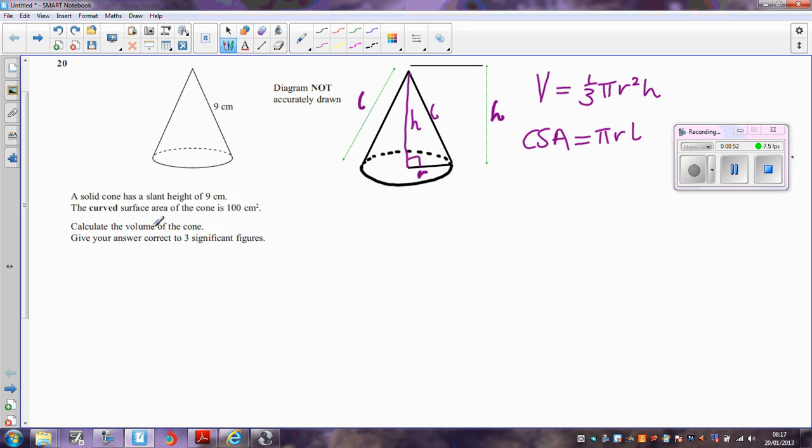Okay, let's see what the question is asking us. They're giving us the curved surface area, which is 100 square centimeters. They're also giving us the slant height, so we know that l is equal to 9. I can use this formula then to work out what r is.